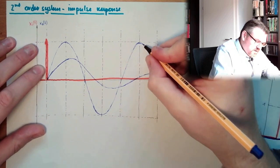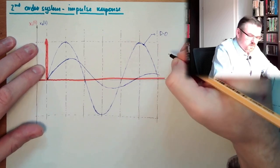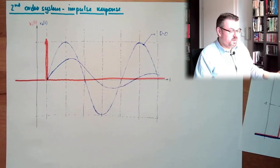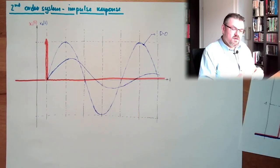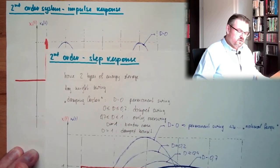So this here is D equals zero. Again, permanent swing. What if we are at, let's say, here—make this fat, I will also make this fat—0.7.